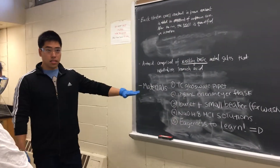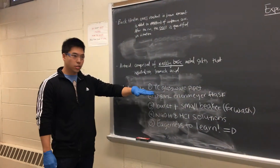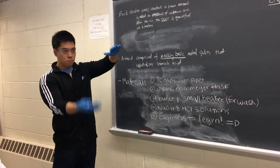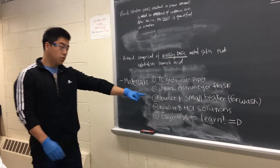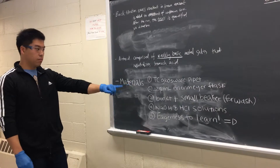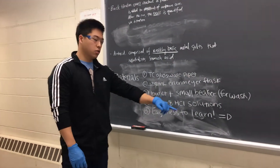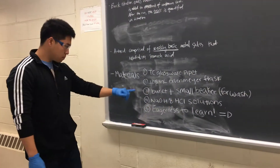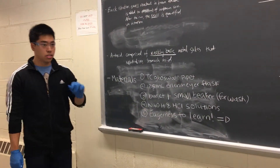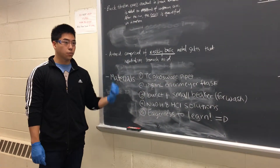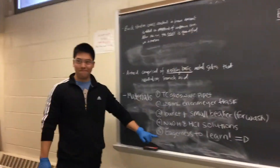The materials you'll need for this lab: you'll need your TC clasper pipette — that's the really weird balloon-shaped looking pipette. You also need a 125 mL Erlenmeyer flask, a burette plus a small beaker for washing, your sodium hydroxide and hydrochloric acid solutions that you standardized last week, and five — an eagerness to learn.